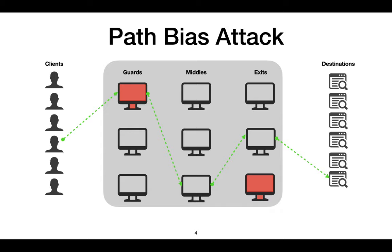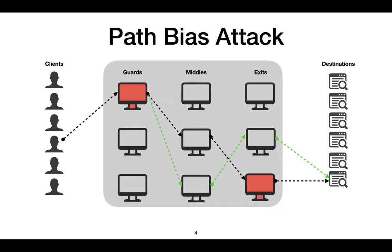During a path bias attack, when a client uses a compromised guard, the adversary identifies if the circuit is not using a compromised exit — for example via traffic fingerprinting — and drops that circuit. This results in a new circuit being built, which may pass through the compromised exit. If not, the process can be repeated.